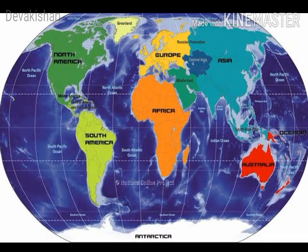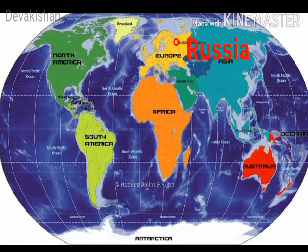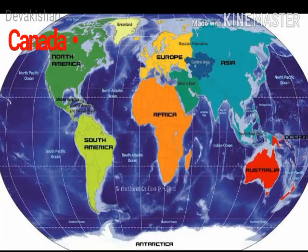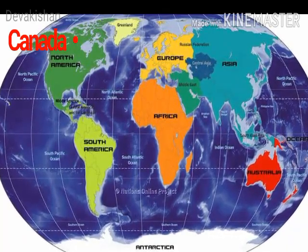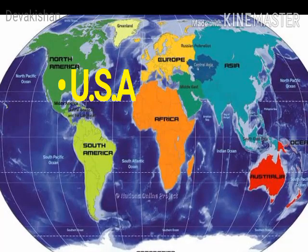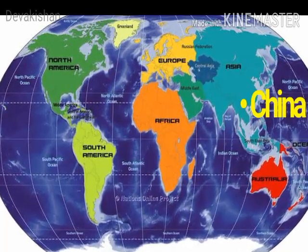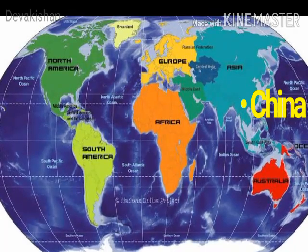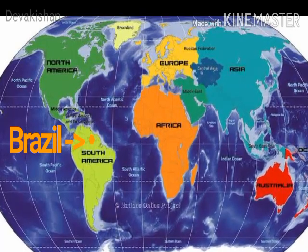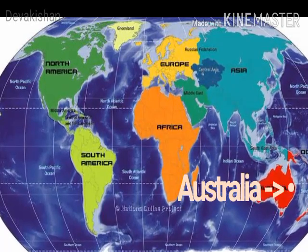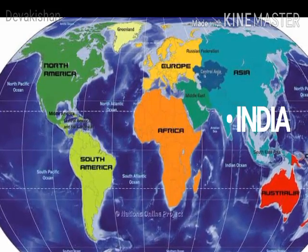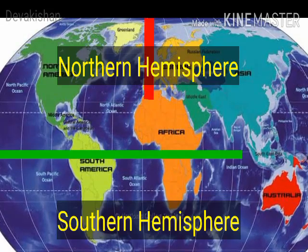The seven largest countries in the world by area are: 1. Russia – 1,70,98,242 sq km; 2. Canada – 99,84,670 sq km; 3. USA – 98,33,517 sq km; 4. China – 95,96,961 sq km; 5. Brazil – 85,15,767 sq km; 6. Australia; and 7. India – 32,87,263 sq km.